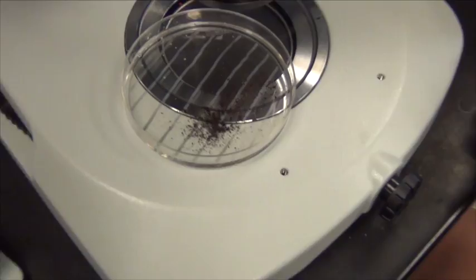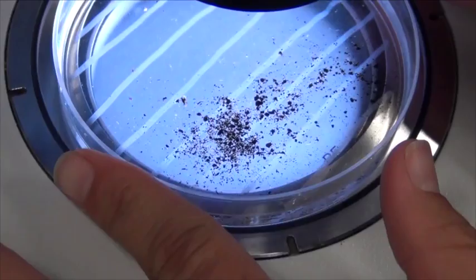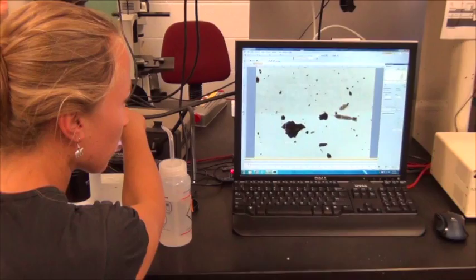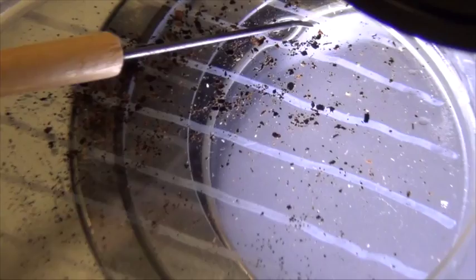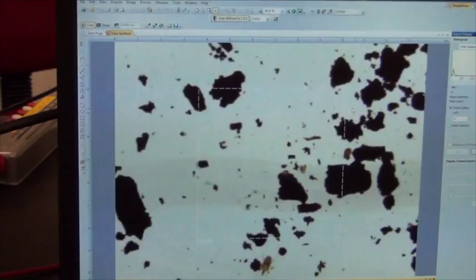After extraction, fauna samples are preserved in ethanol until they can be identified. For identification, the sample is poured into a dish and examined under a microscope. Because there are often many thousands of animals in a given sample, researchers usually use some standardized procedure to get as accurate an estimation as possible without identifying every animal present. For example, here, Ashley uses lines drawn on her petri dish and moves along each line, identifying and counting fauna as she goes.